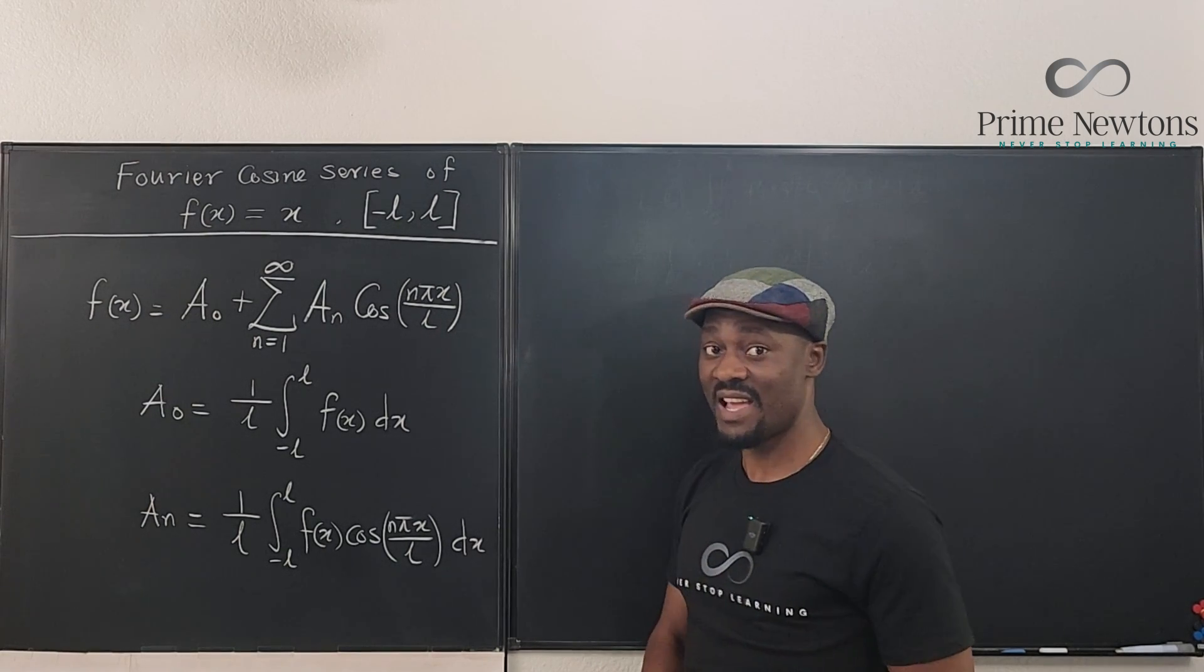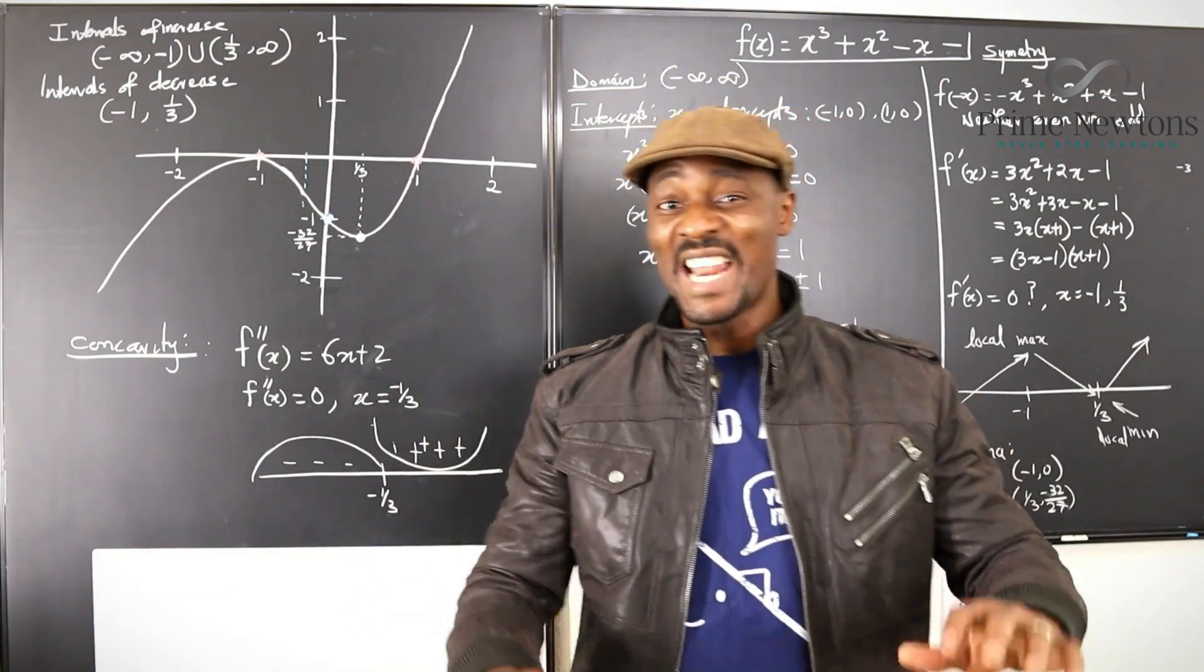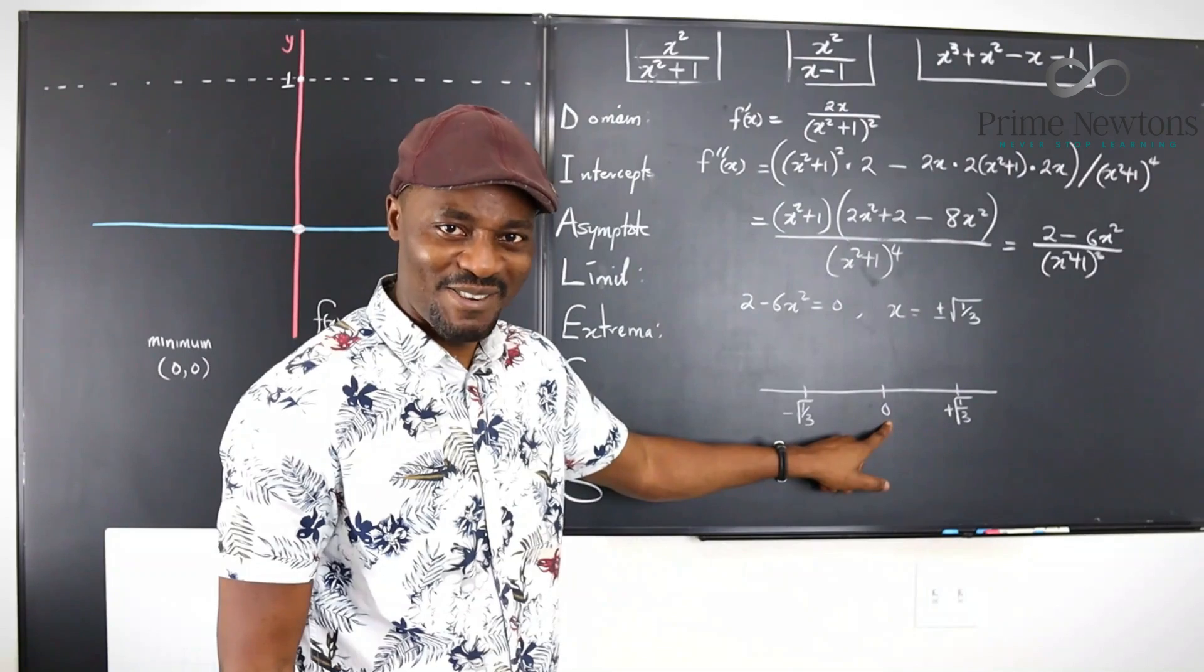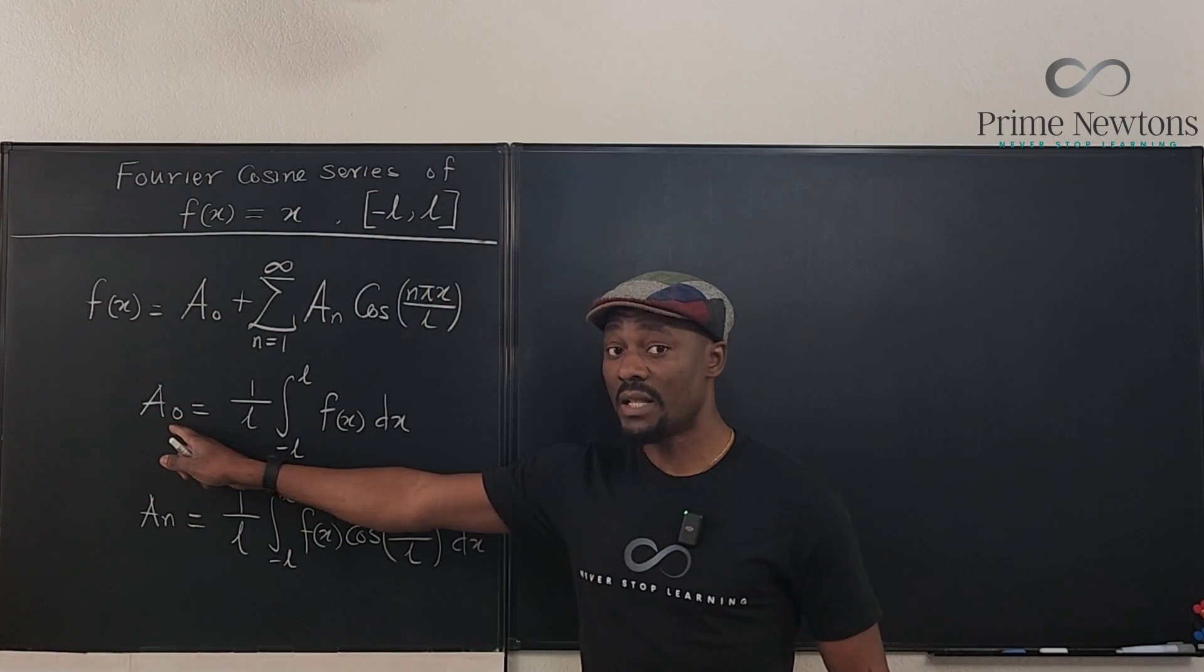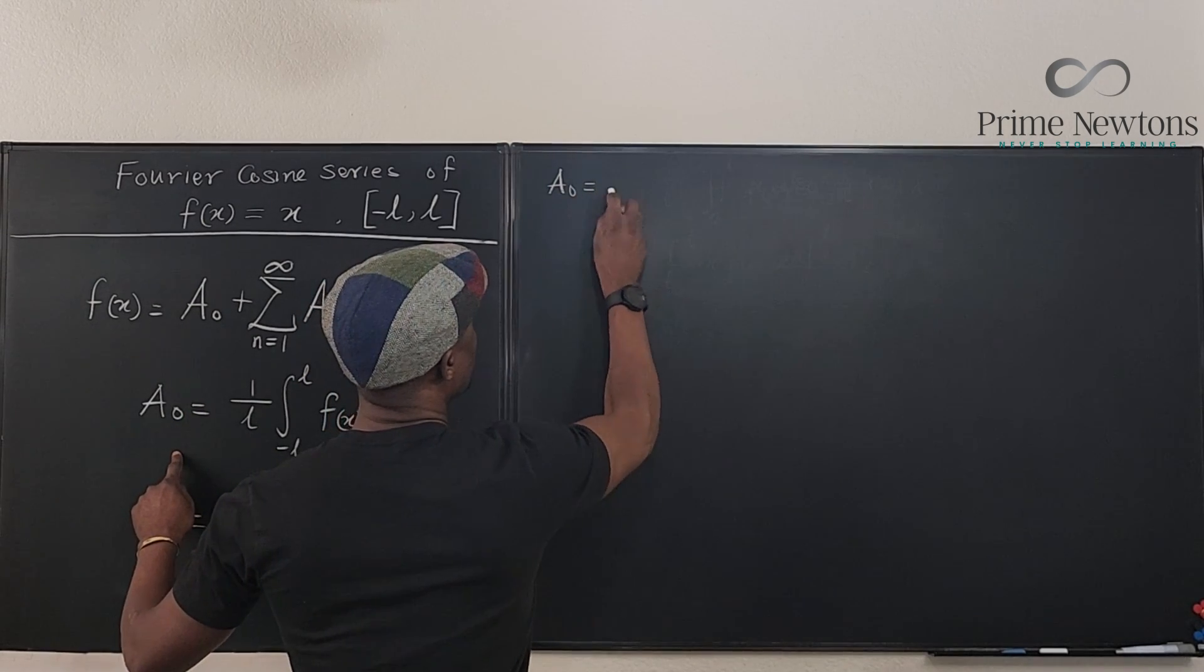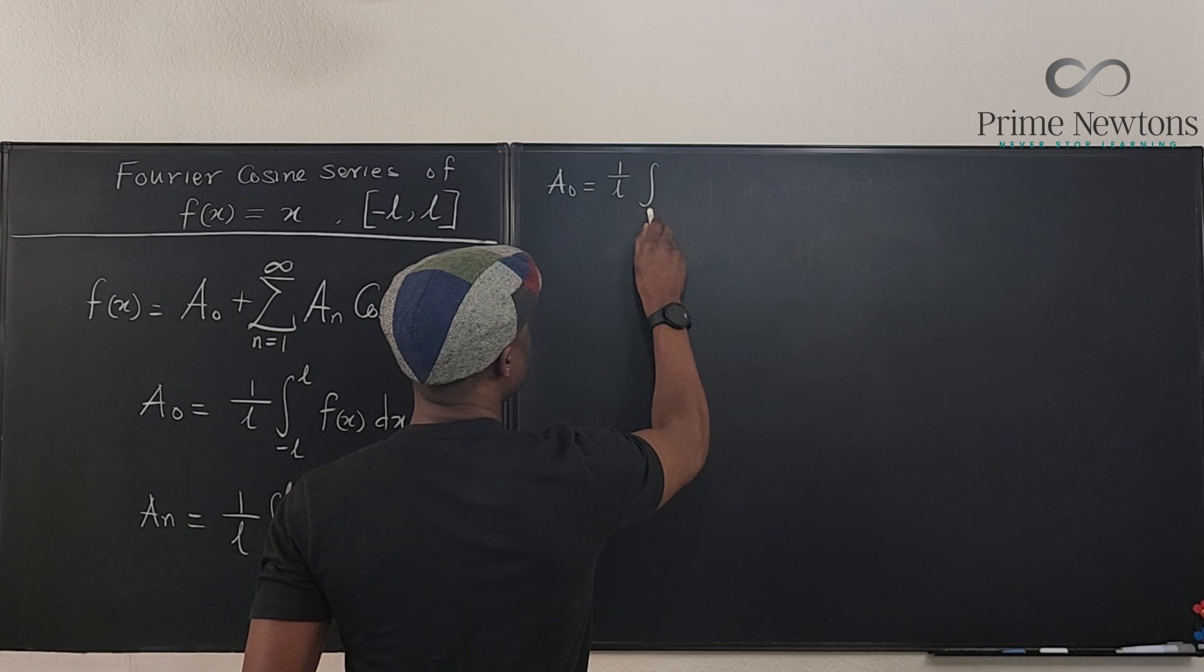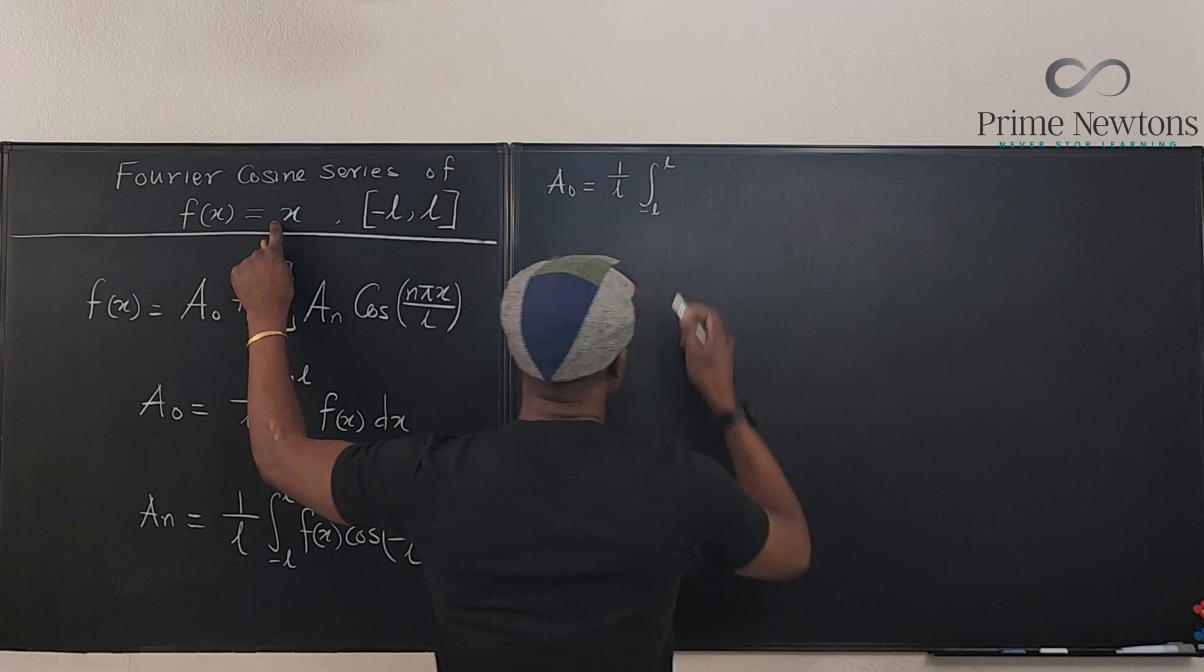Now let's get the answer. Let's get into the video. So let's begin by finding a_0. Let's go. We got a_0 is equal to 1/L. Then you have the integral. That's a terrible integral. The integral from negative L to L of the function we're dealing with is x.